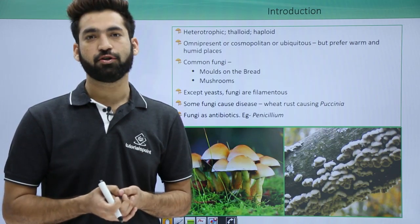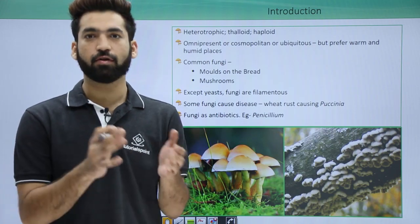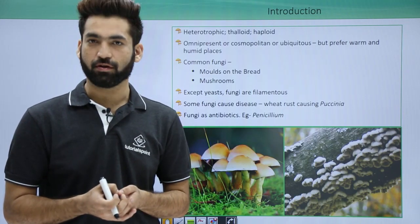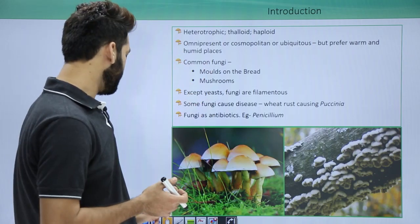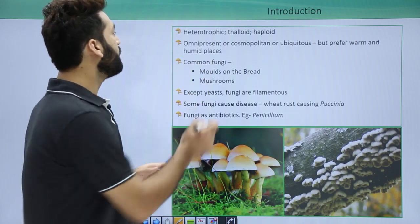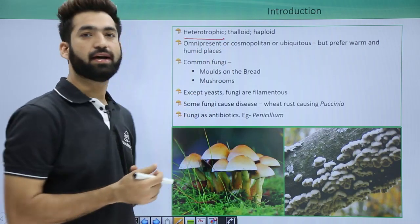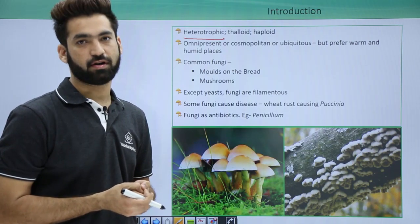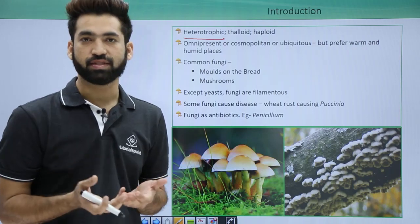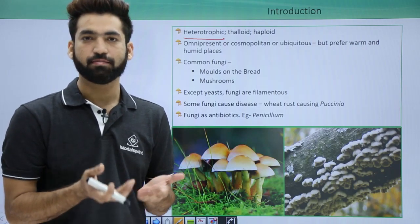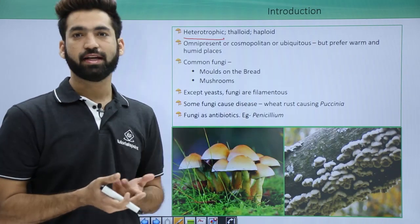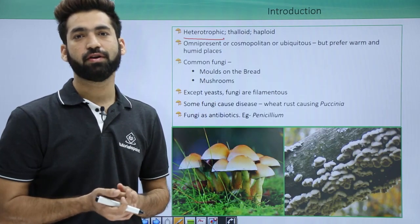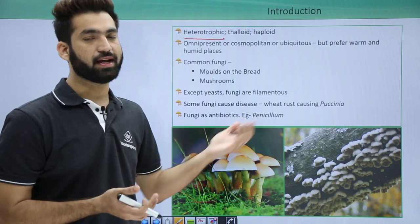When they are heterotrophic they are said to be achlorophyllous — meaning they don't have chlorophyll. The mode of nutrition present in fungi is heterotrophic. They can obtain food by being saprophytes, parasites, or by showing a symbiotic relationship. So all three modes of heterotrophic nutrition are present in kingdom fungi.